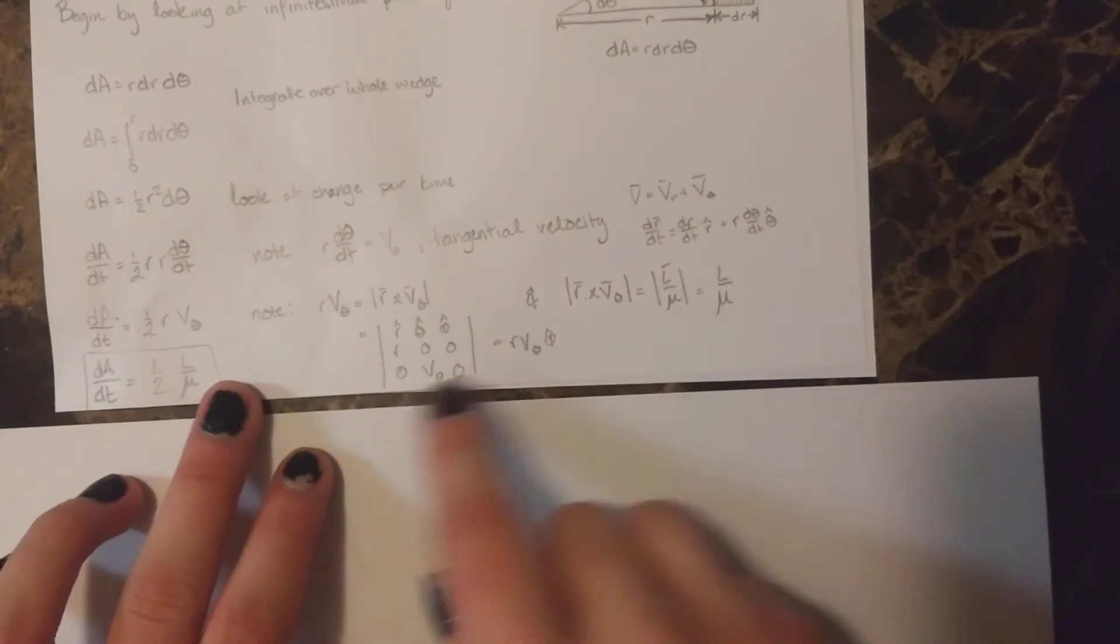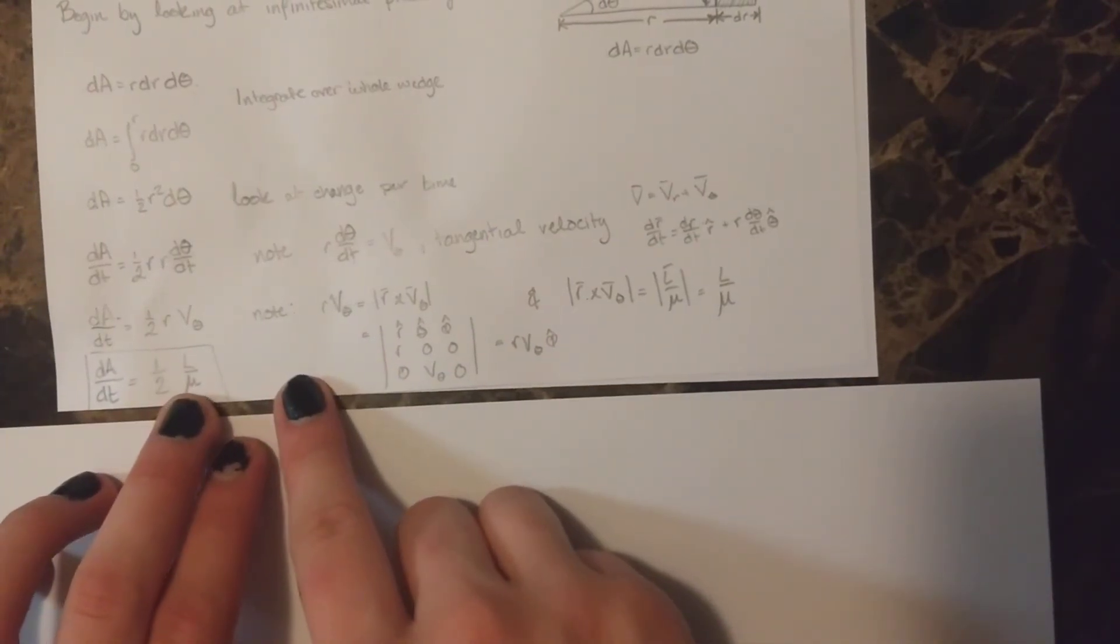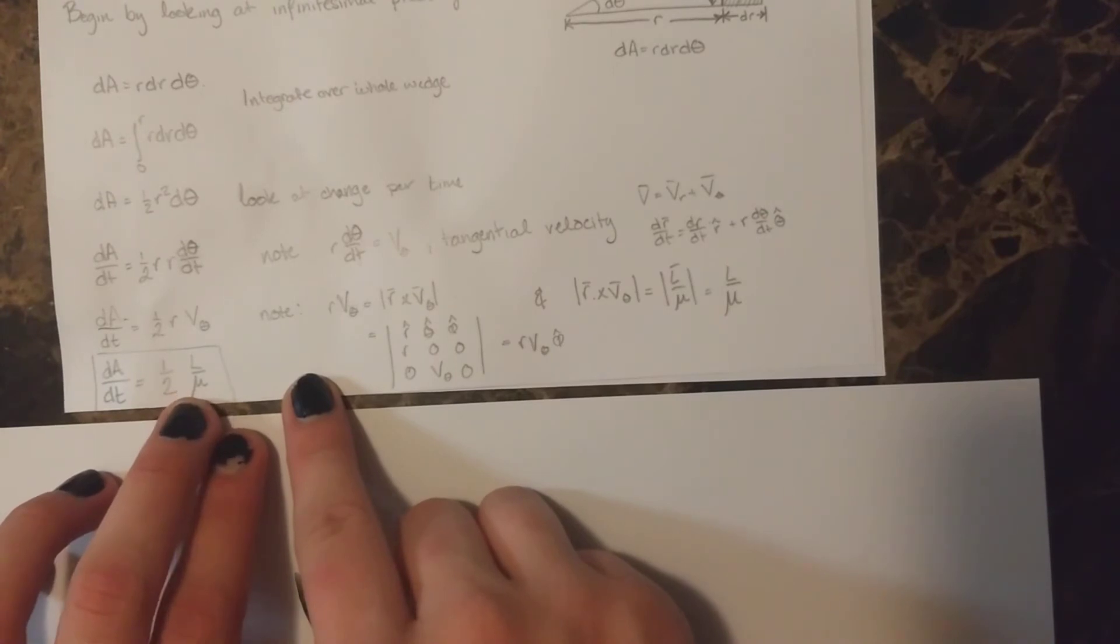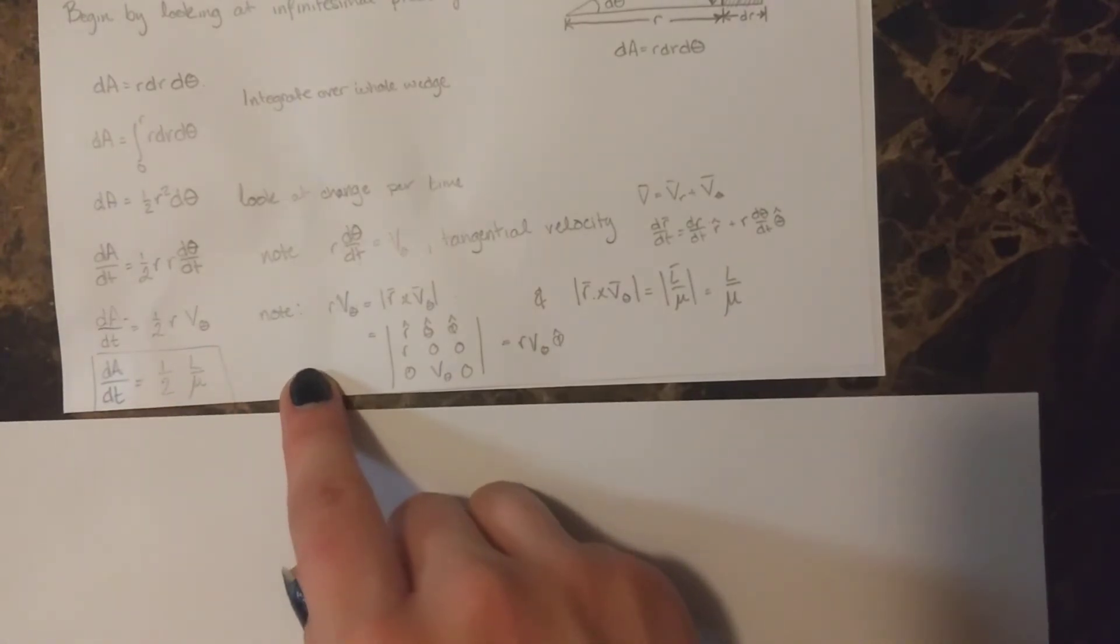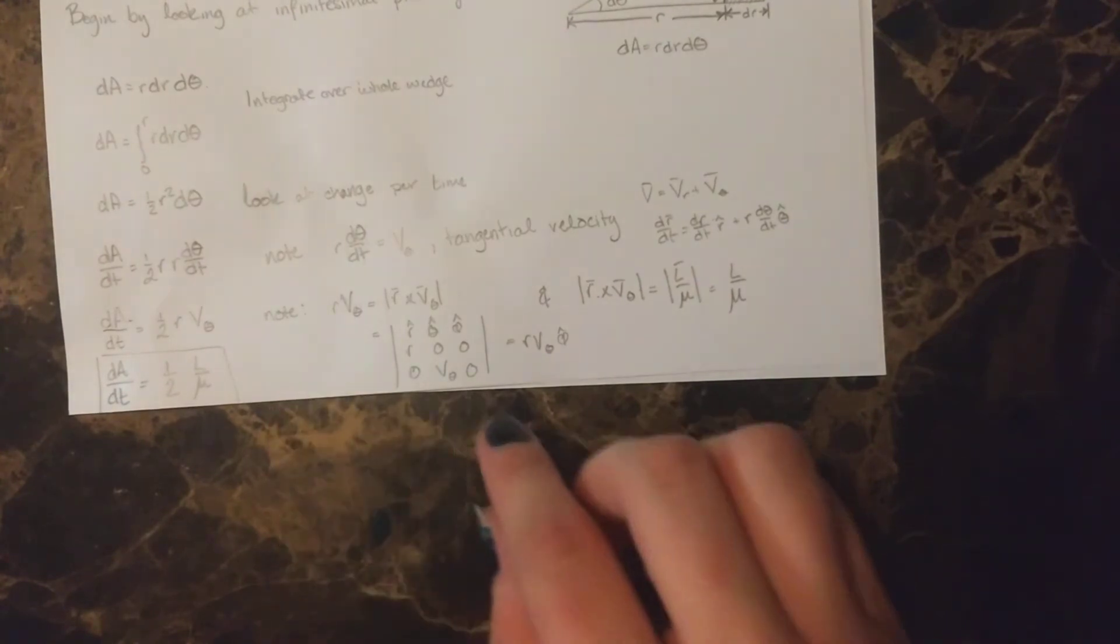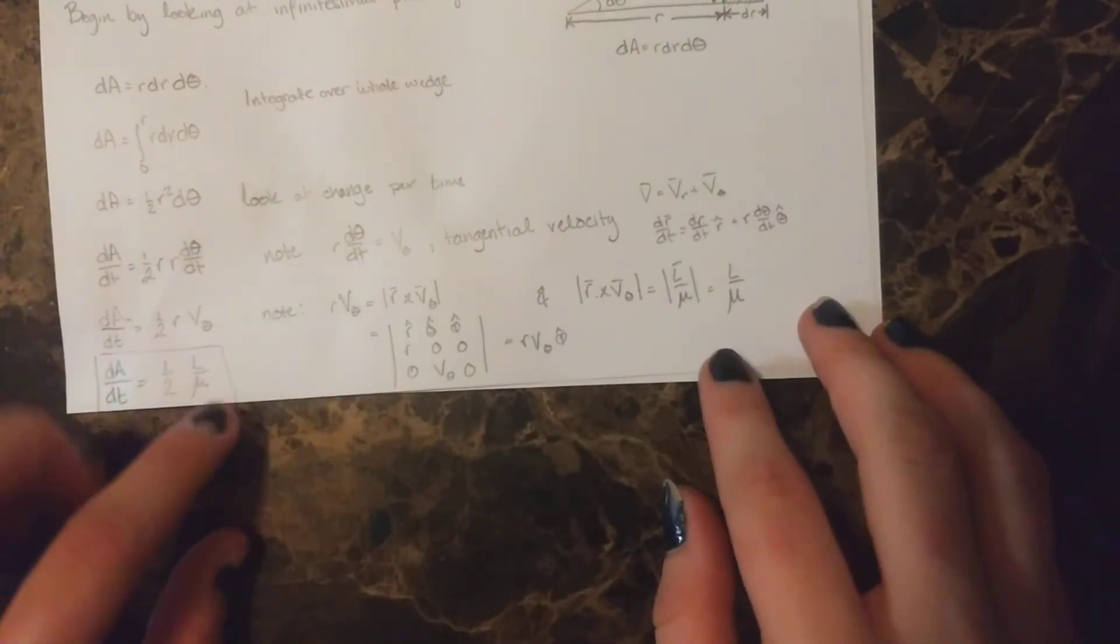So here, if we just reduce, if we substitute the angular momentum over the reduced mass for r v theta, then we have Kepler's second law.